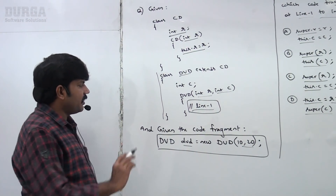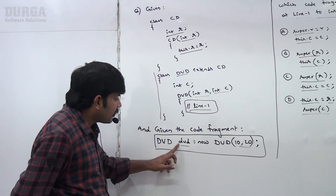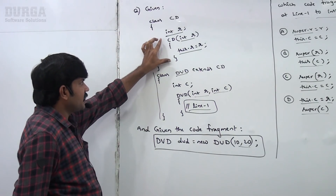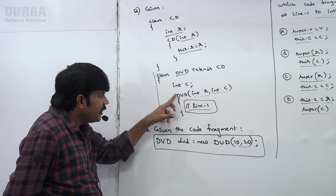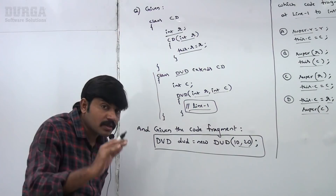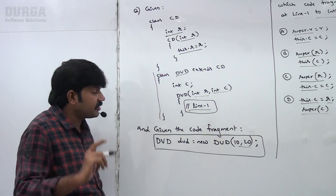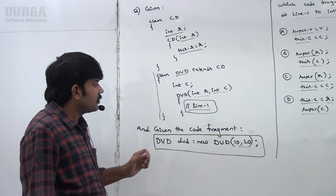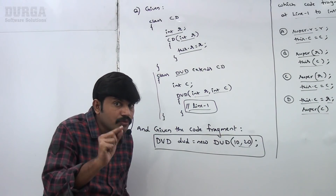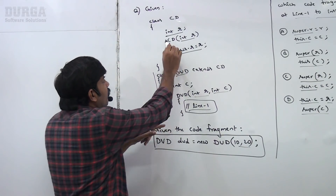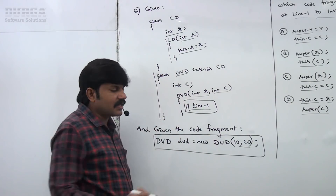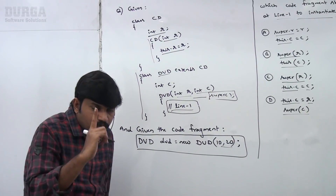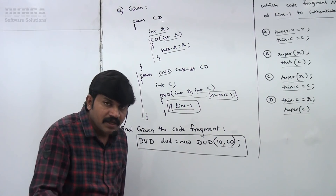Take special care here. The important conclusion is: if a parent class constructor contains an argument constructor and the child class contains a two-argument constructor, we must take care. If the parent contains an argument constructor, while defining the child class constructor, we compulsory require to call this constructor. The first line inside the child class constructor should be either super or this.